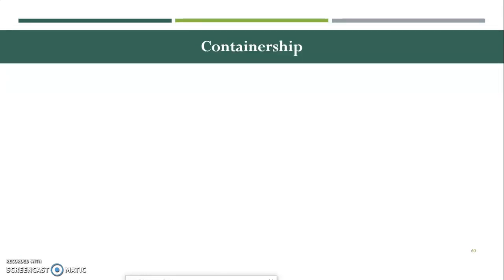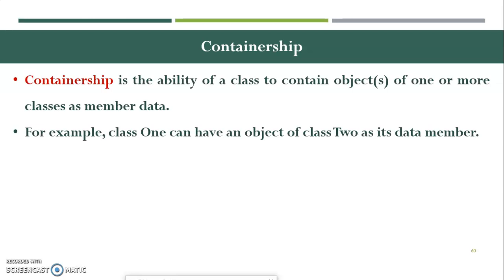Containership — the name itself suggests that something is going to get contained in some other object. In object oriented terms, we always take help of a class. A class is a skeleton which contains attributes and operations. Attributes are the data members and operations are the member functions. Containership is an ability of a class to contain objects of one or more classes as a data member.